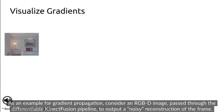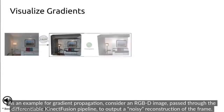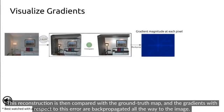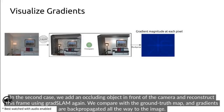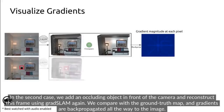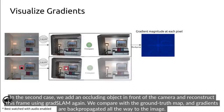As an example, consider an RGB image passed through the differentiable KinectFusion pipeline to output a noisy reconstruction of the frame. This reconstruction is then compared with the ground truth map, and the gradients with respect to this error are back-propagated all the way to the image. In a second case, we add an occluding object in front of the camera and reconstruct this frame using Grad SLAM again, then compare it with the ground truth map and back-propagate the gradients all the way to the image.